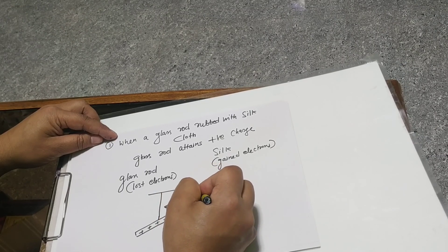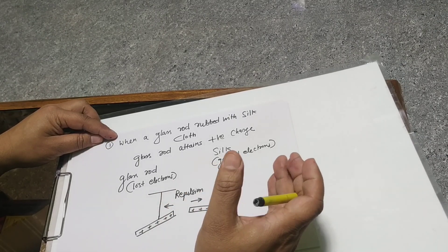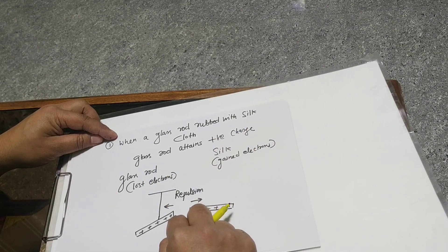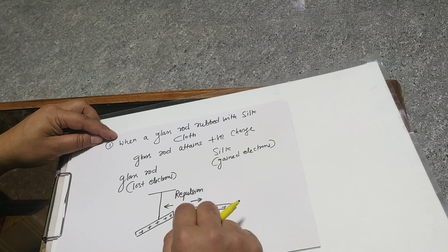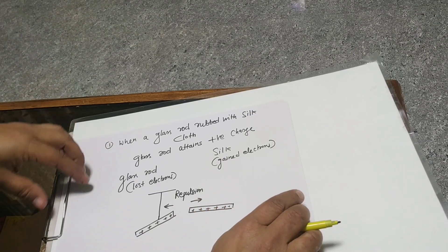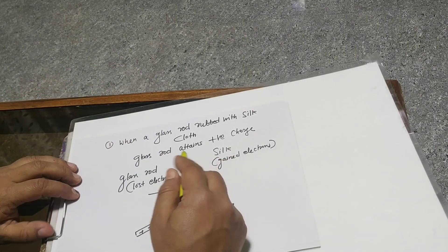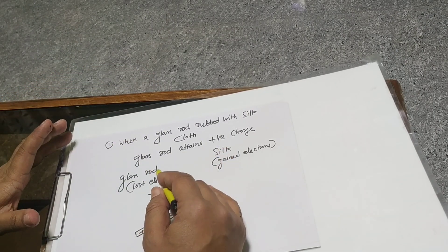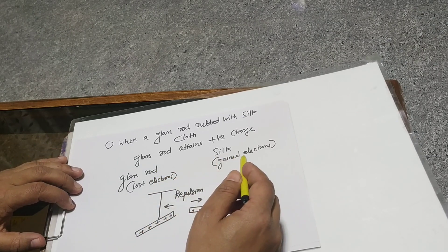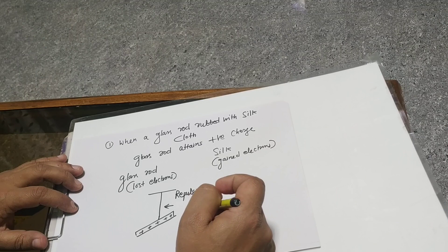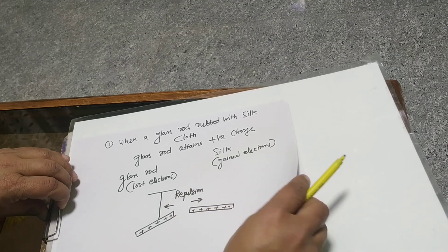Now, all of you know that the gravitational force was an attractive force. That means there is another force which is going to come, and that is based on charge. This was later known as Coulomb's Law of Electrostatics. When a glass rod is rubbed with silk cloth, the glass rod attains positive charge — that means it is losing electrons, while the silk is gaining electrons. If you bring two glass rods together, a sudden repulsion is observed.